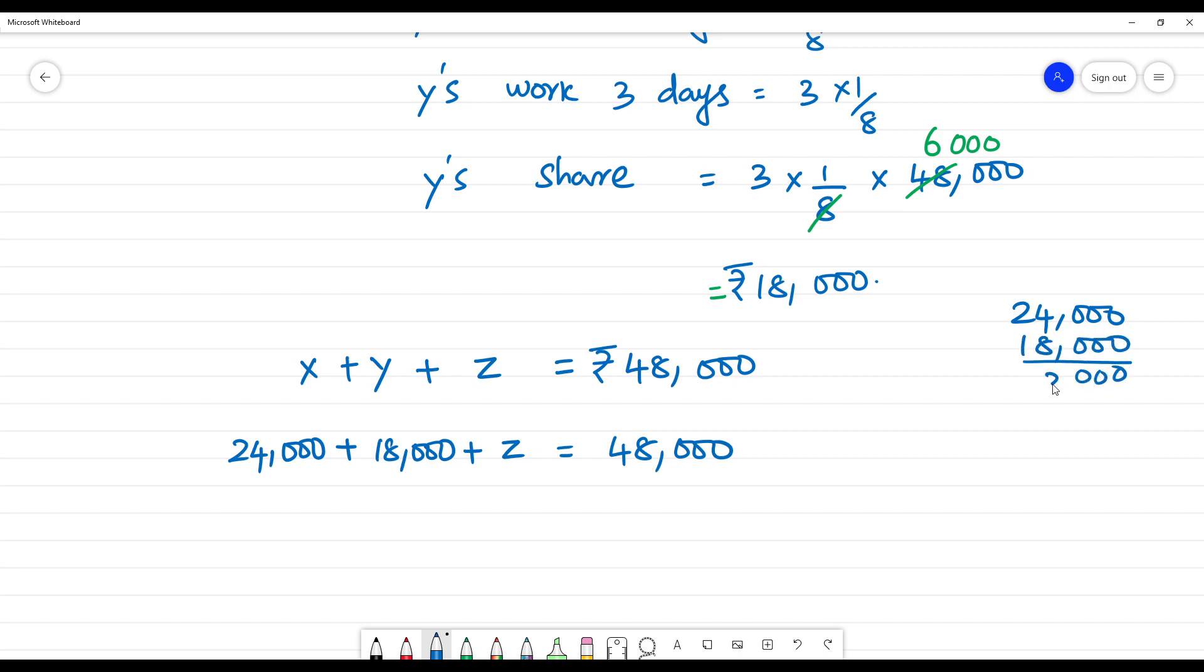24,000 plus 18,000 equals 42,000. So this is 42,000, and 42,000 plus Z equals 48,000.